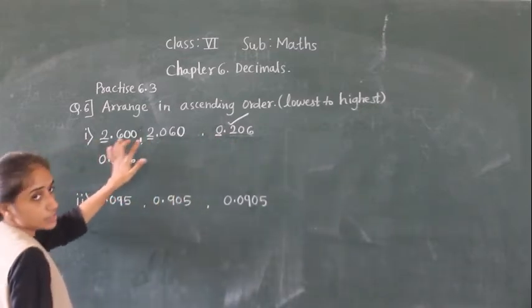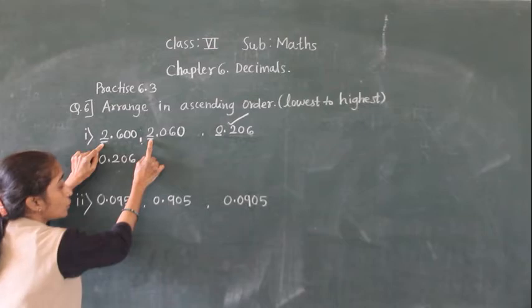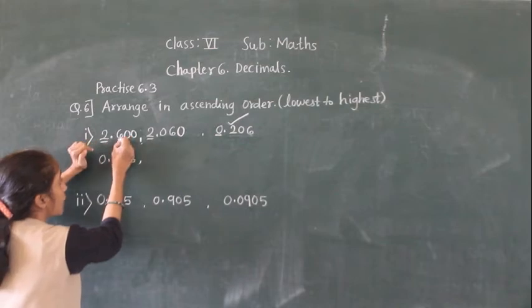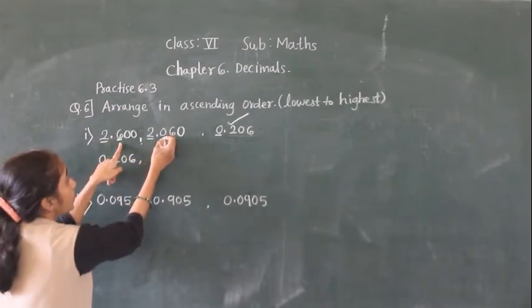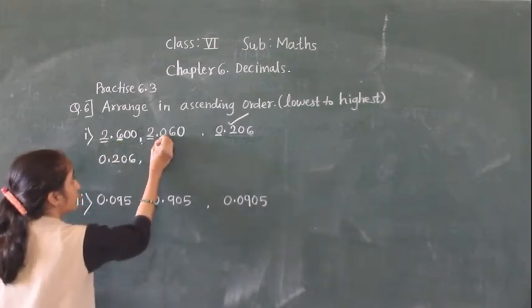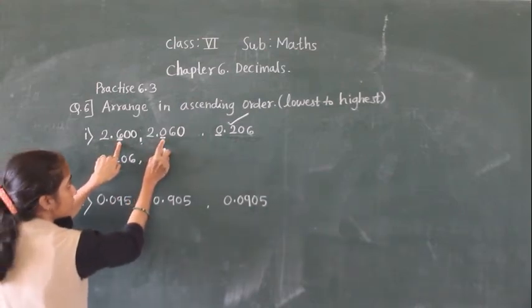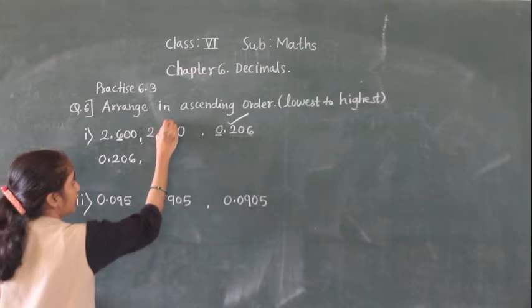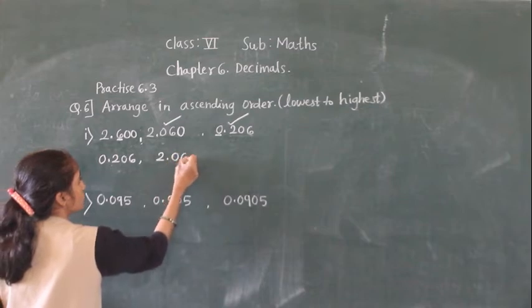Now we have to compare the remaining two numbers, both with whole number part 2. The whole number parts are the same, so we compare the decimal part — the tenths place. At the tenths place, here 6 is given and here 0 is given. So which is smaller? 0 is smaller, so we write 2.060 next.